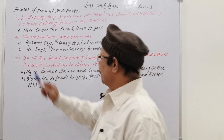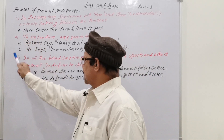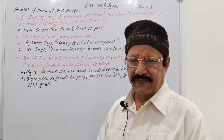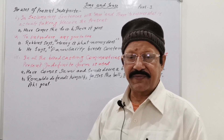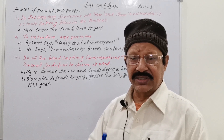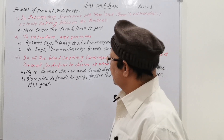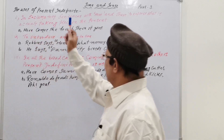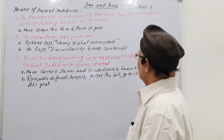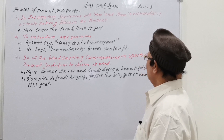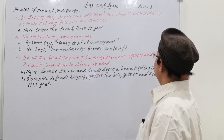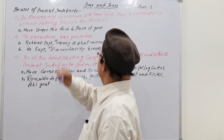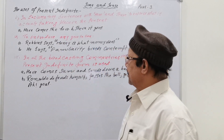Now from here, points five, six, and seven — there are three more points where present indefinite tense is used. Number five: in exclamatory sentences with 'here' and 'there' to express what is actually taking place at the present.